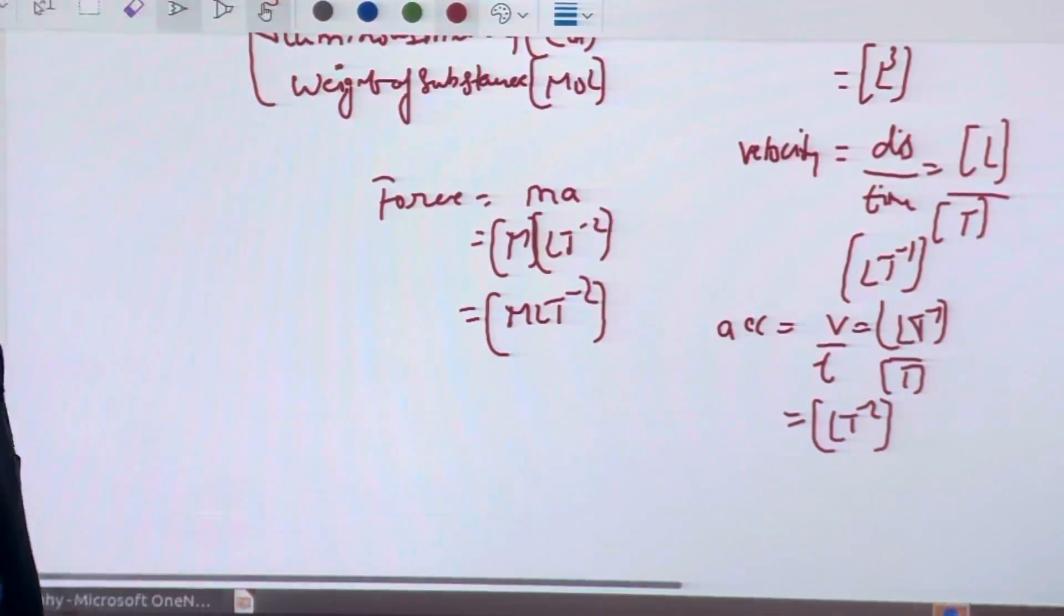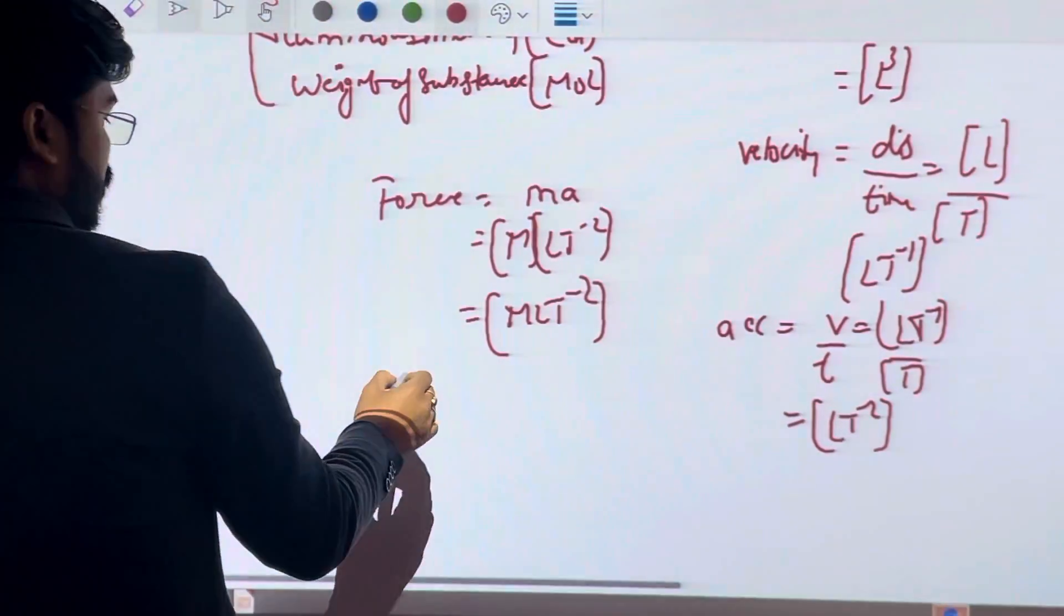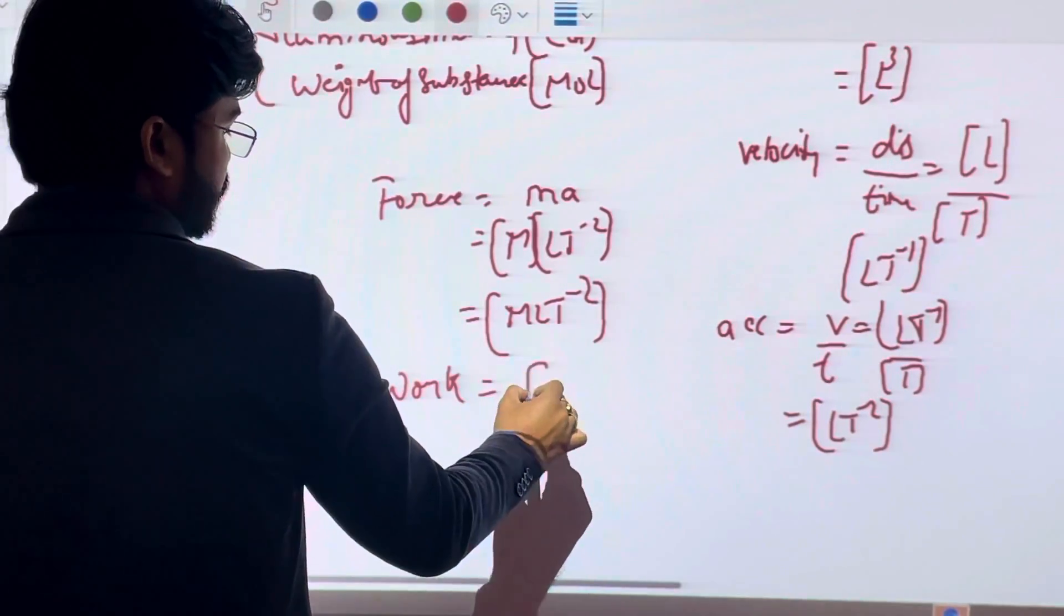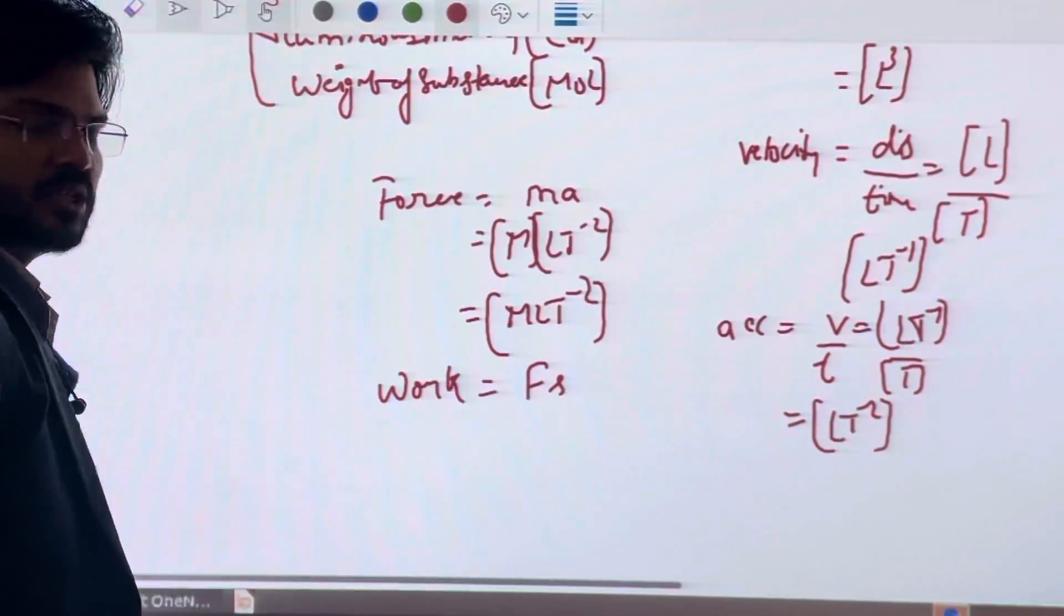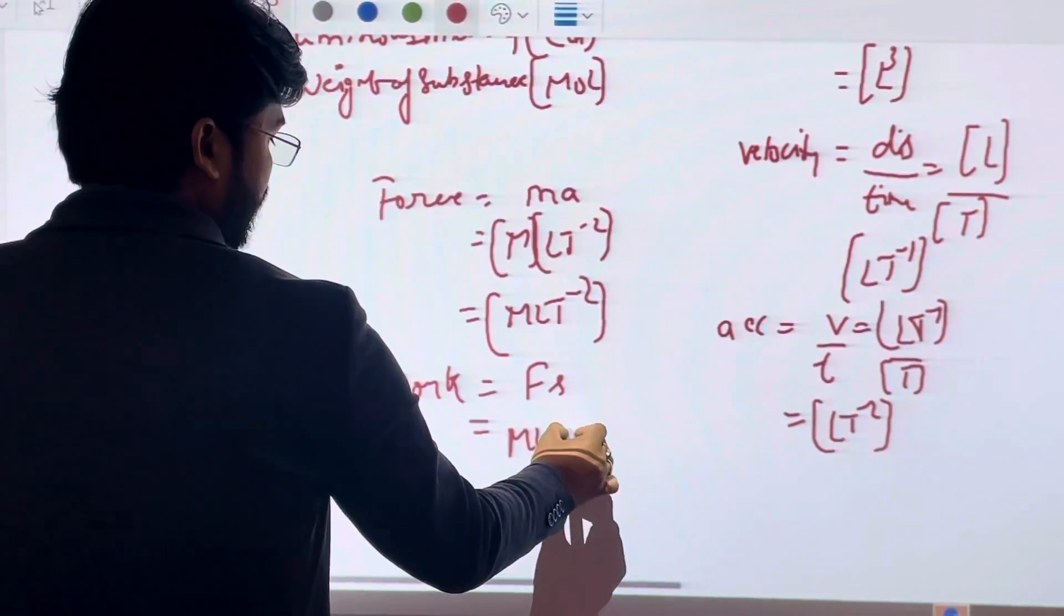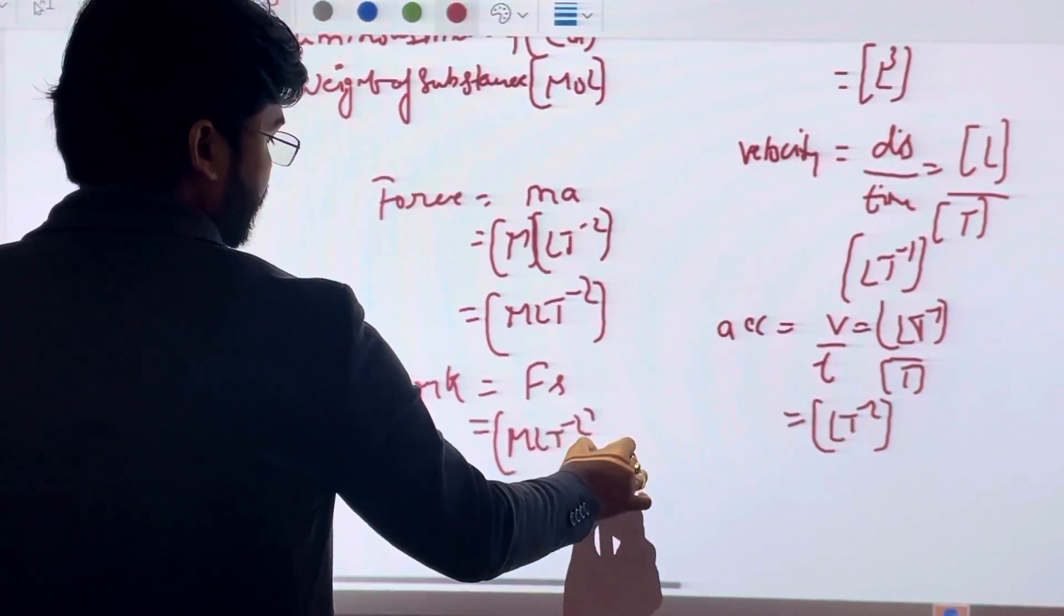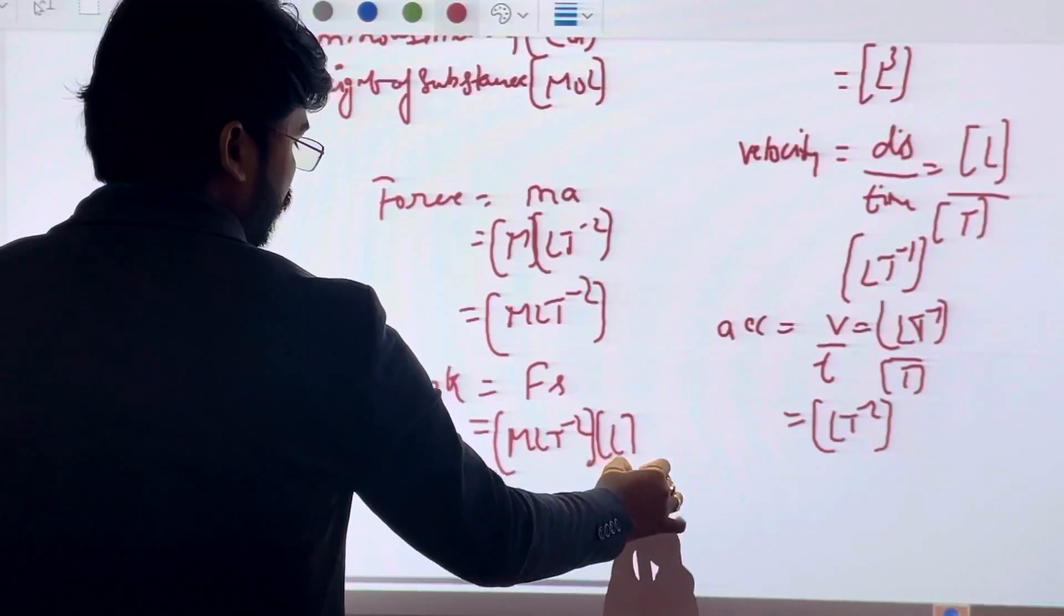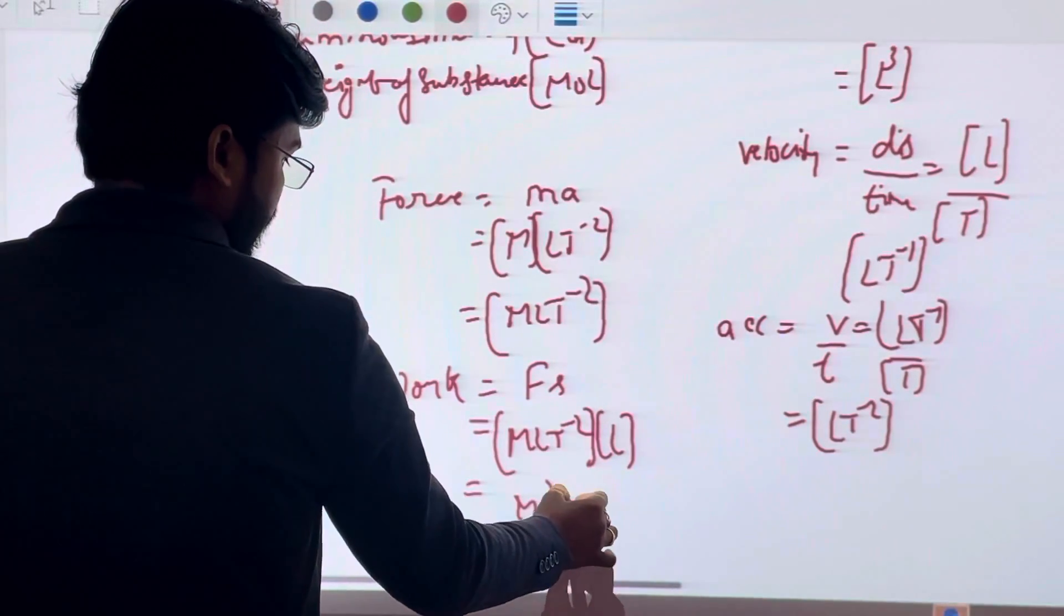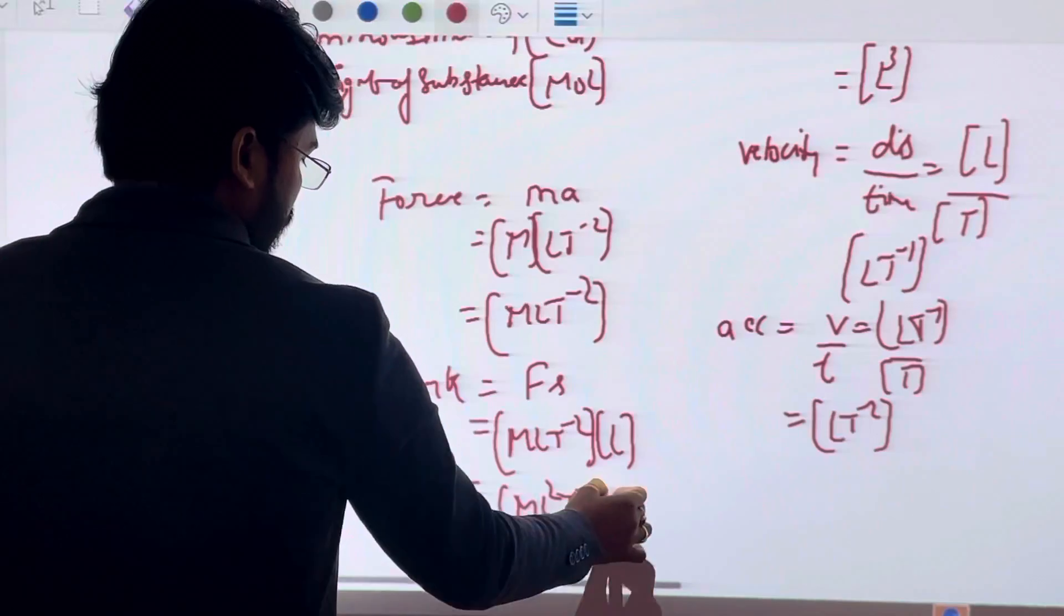Similarly, work. W equals Fs, force into displacement. Force MLT minus 2 and displacement is L, so work dimension is ML²T minus 2.